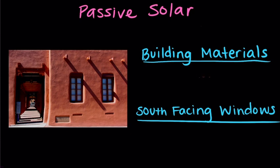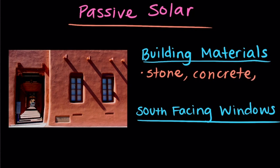Some examples of how homes can be passively heated are through the actual materials that the home is made out of. So materials like stone, concrete, adobe, they absorb a lot of the sun's heat during the day and then slowly release it at night.